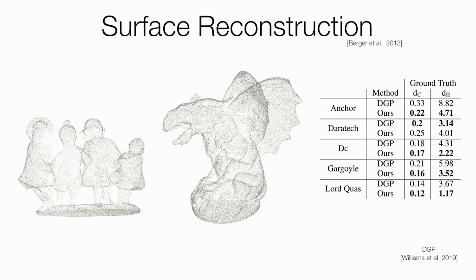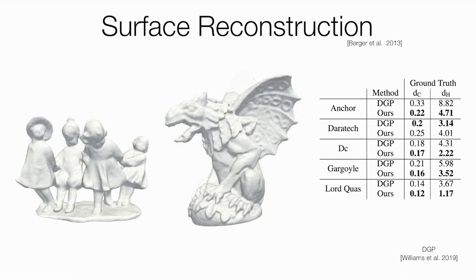For baseline, we use DGP by Williams et al, which is a chart-based surface reconstruction method which previously achieved state-of-the-art results on this benchmark. On the left, we show two of our reconstructions. The table on the right presents a two-sided Chamfer and Hausdorff distance to the ground truth. You can see IGR outperforms DGP in four out of five shapes, often with large margin.